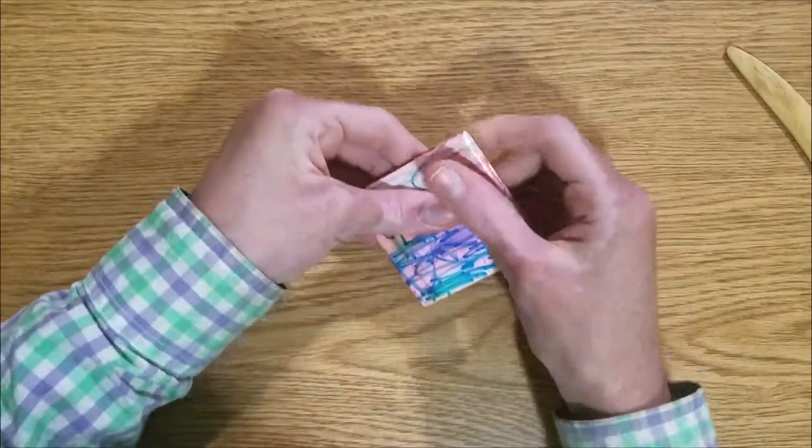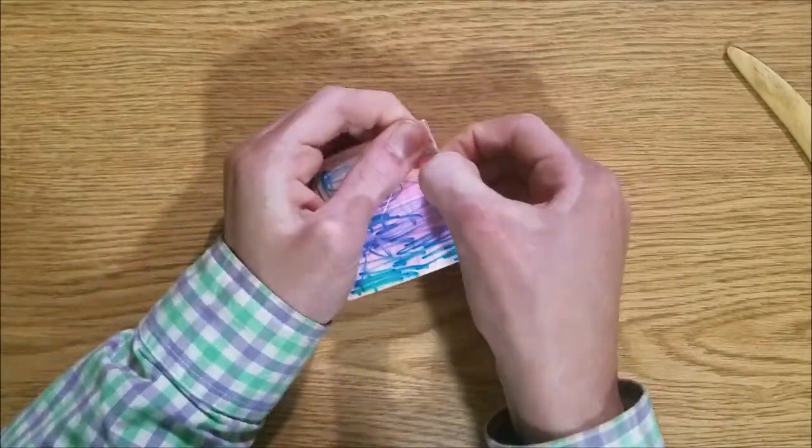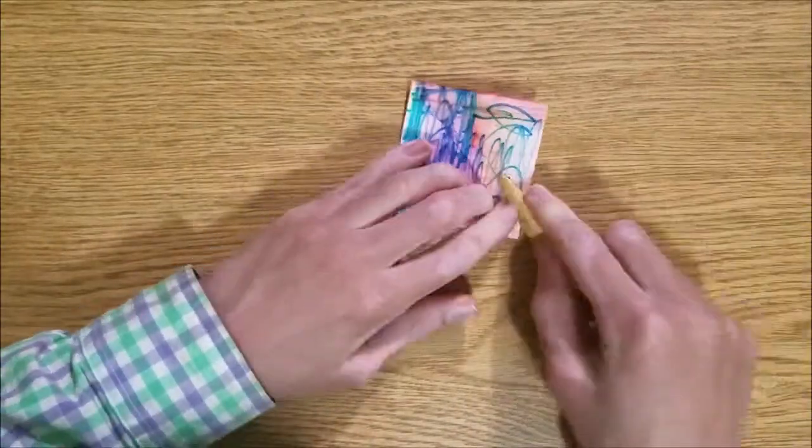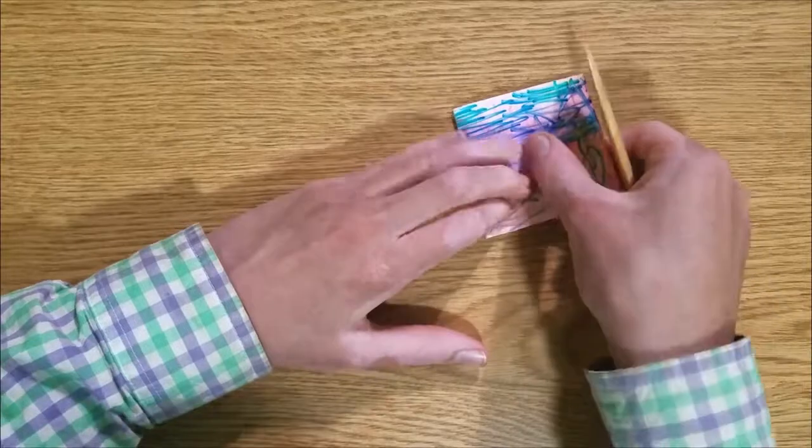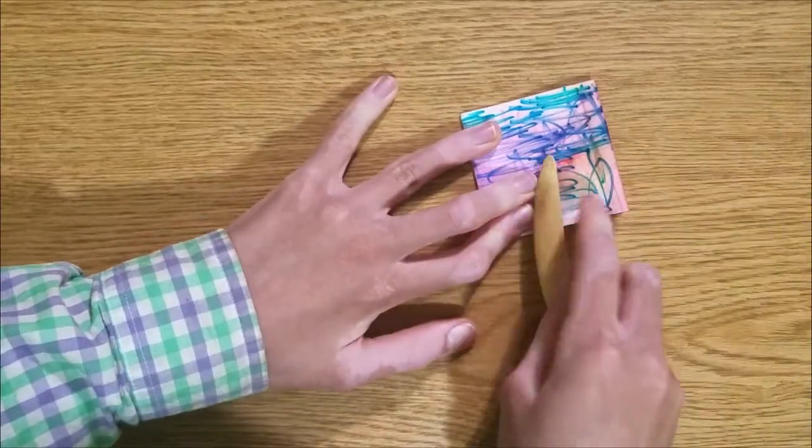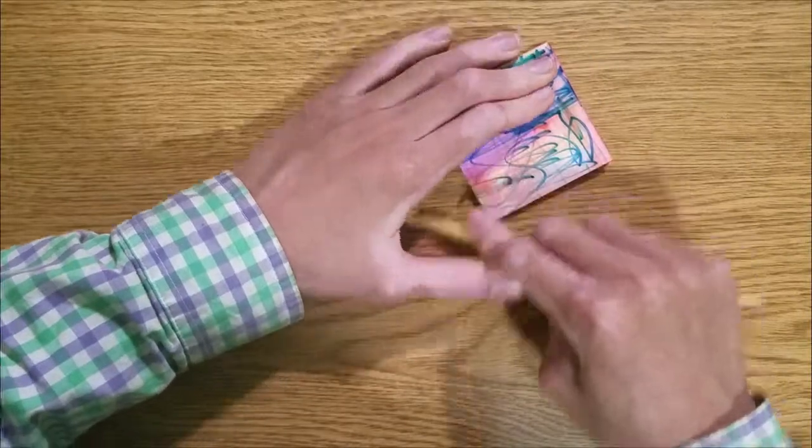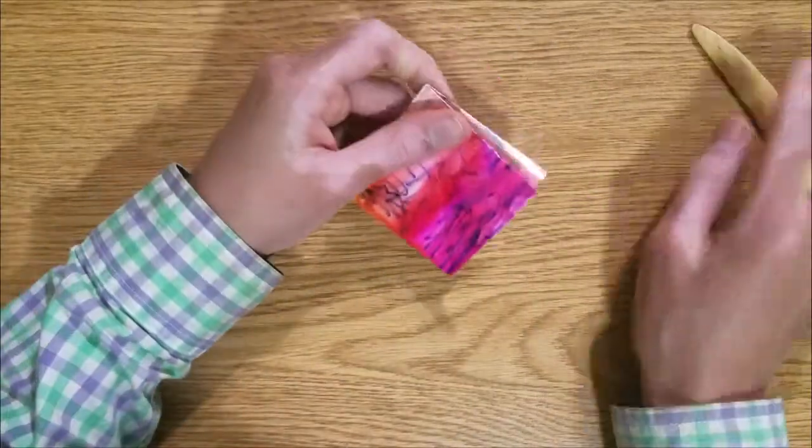That was a pretty slow way to make the square base because I wanted to explain it. Because since this is such an easy model, there could be some beginners that might not even know what a square base is.